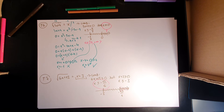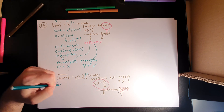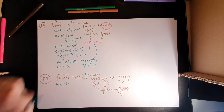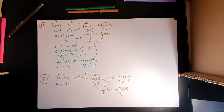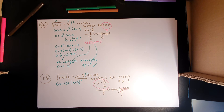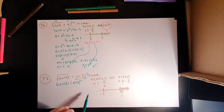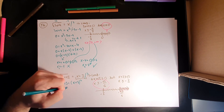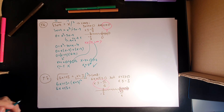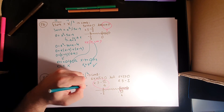The root is alone on the left side, so we can square immediately. The left side becomes 6x plus 13. On the right side, we are squaring a binomial — the square of a sum — so we apply the formula. The right side becomes x squared plus 6x plus 9.